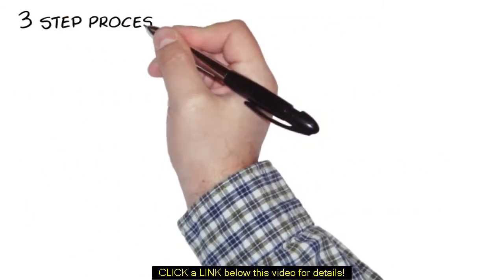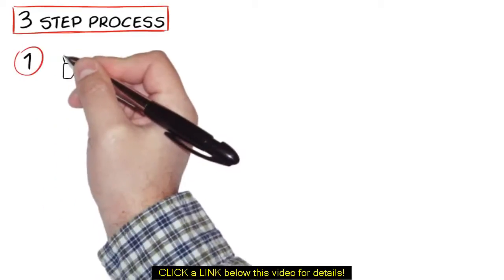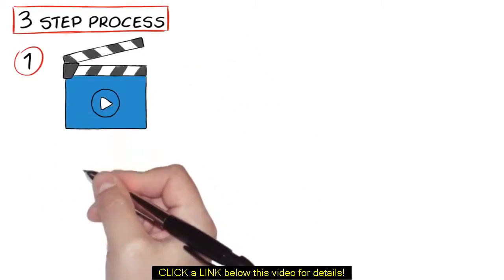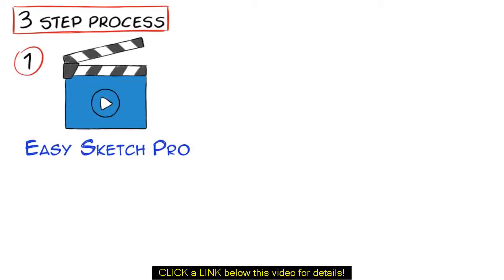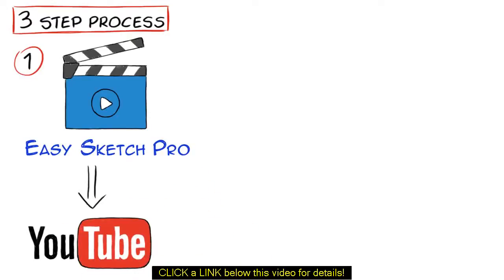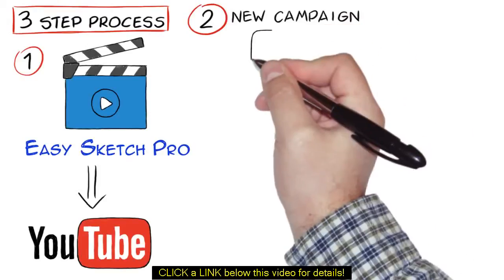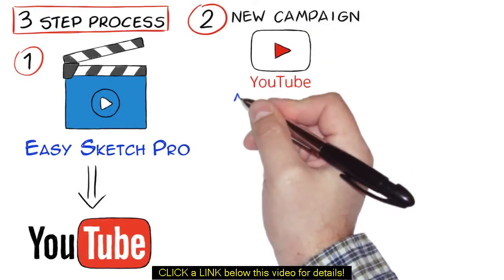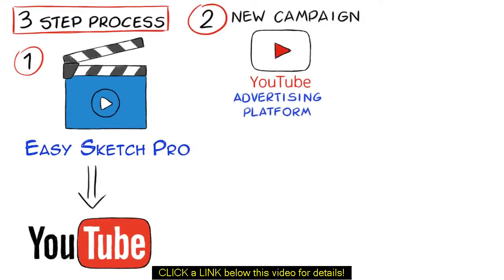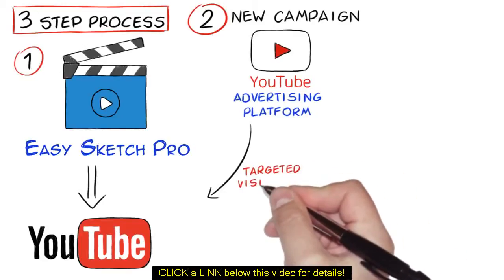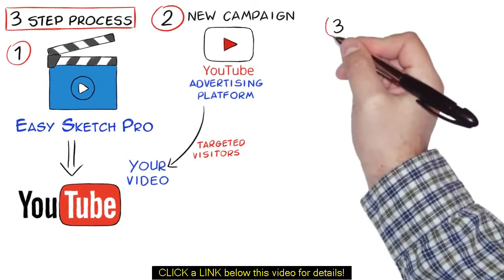It's a simple three-step process. One, just create an attention-holding video using EasySketch Pro or your favorite video software and upload it to YouTube with a link in the description and caption back to your website or your offer. Two, create a new campaign using YouTube video advertising platform and then super drive targeted visitors to your video on YouTube. And three,